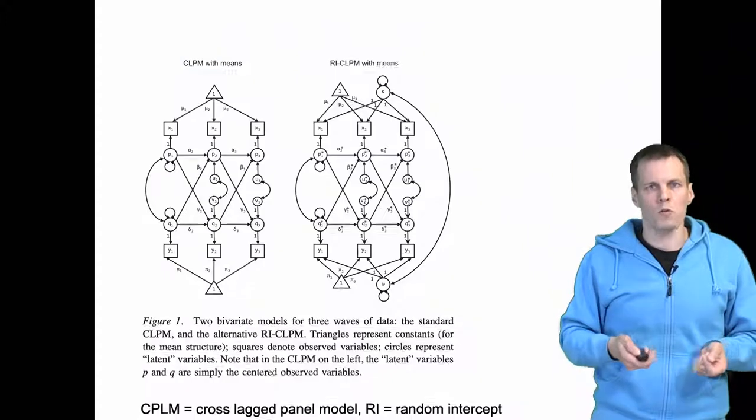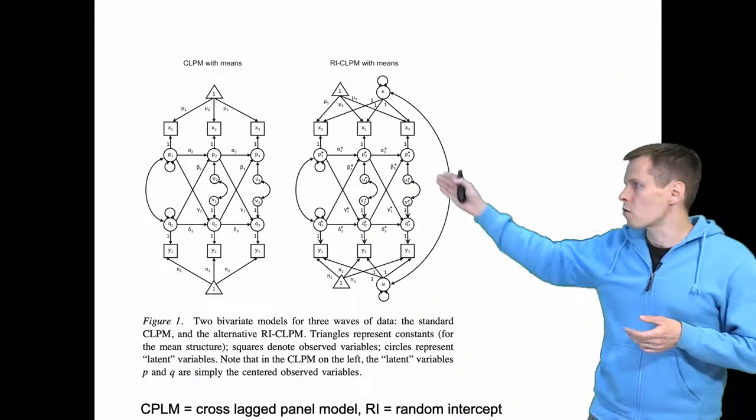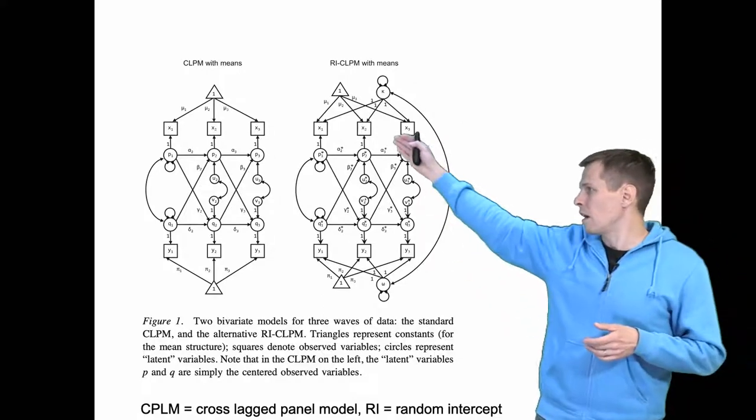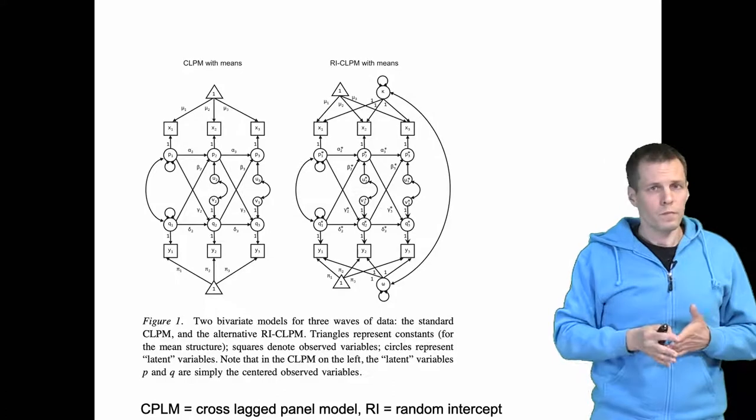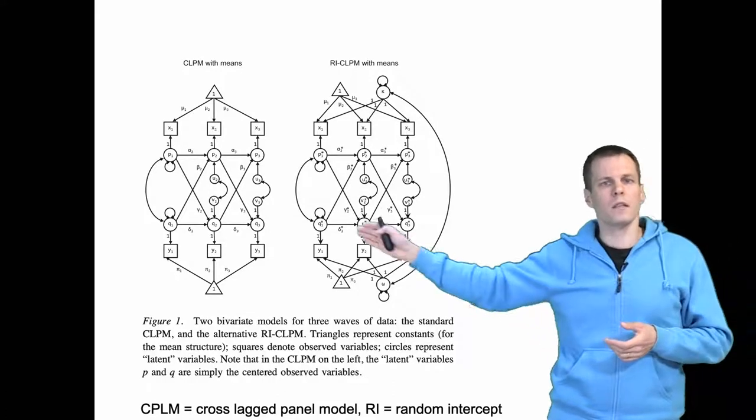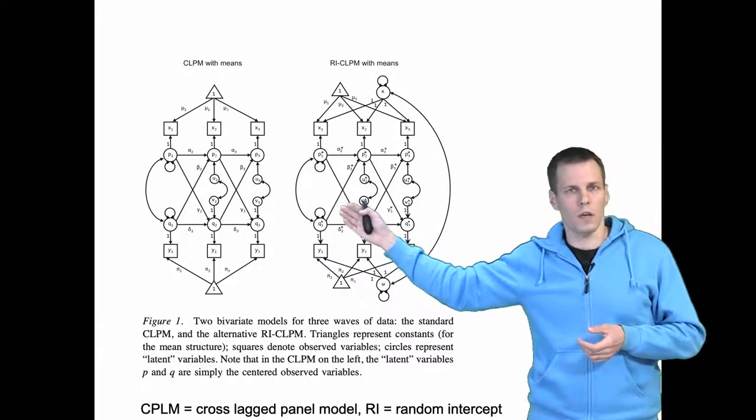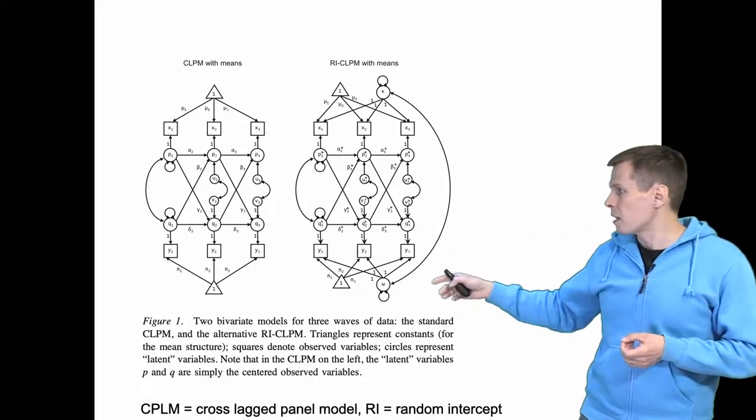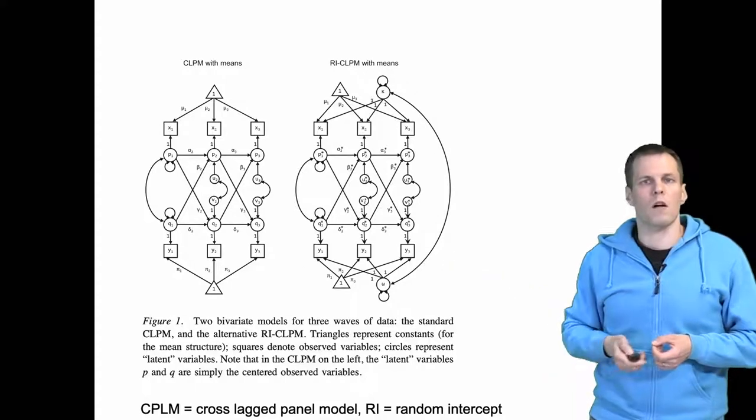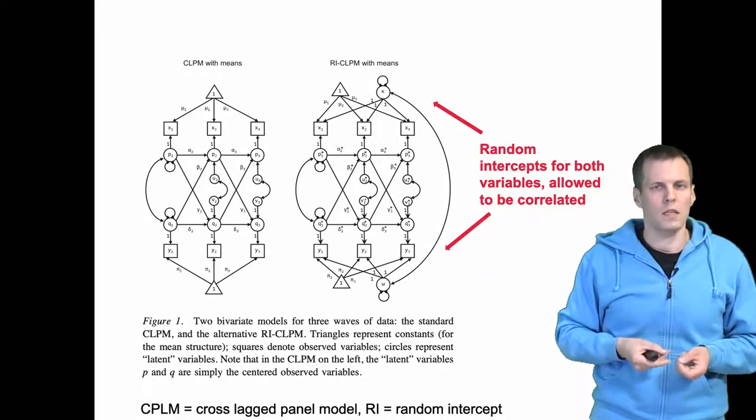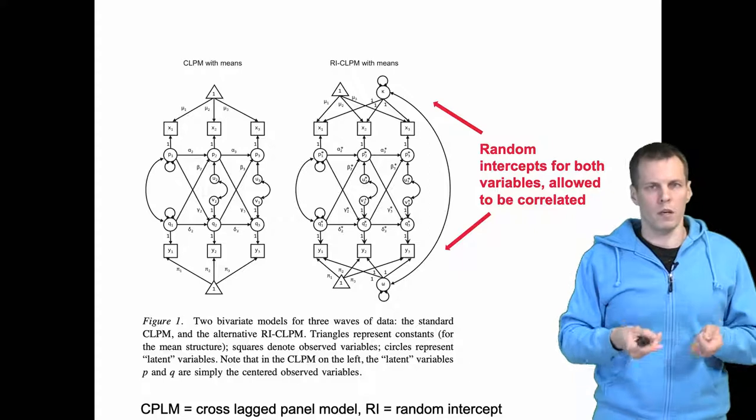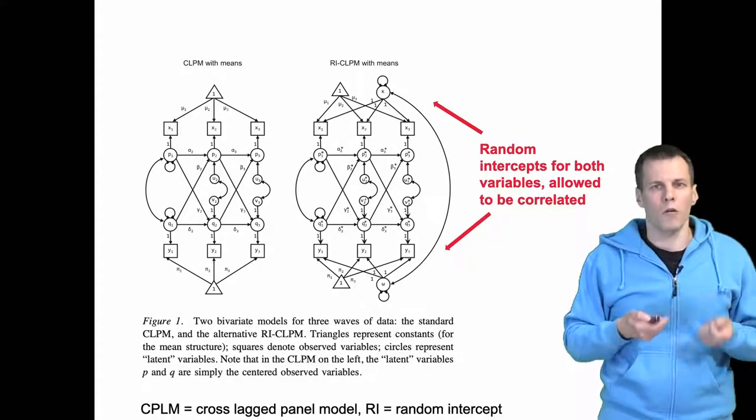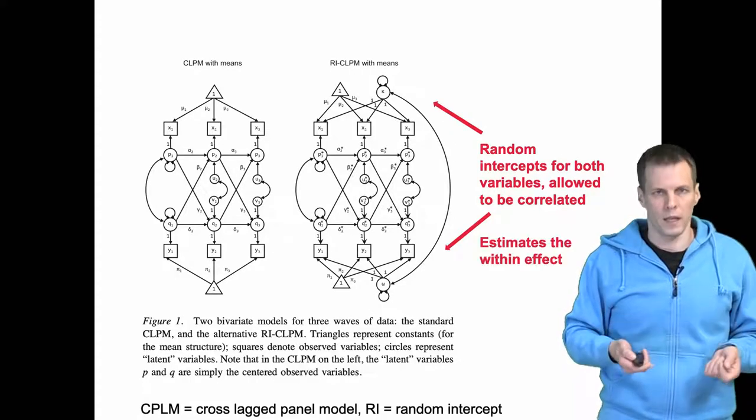What they propose is this cross-lagged panel model with random intercept—RICLPM. They basically have this normal cross-lagged model, which I'll take a look at in detail in a few slides, and they add random intercepts. These random intercepts are allowed to be correlated. This is a correlated random intercept model, and we know from econometrics that the correlated random intercept model estimates the within effect.